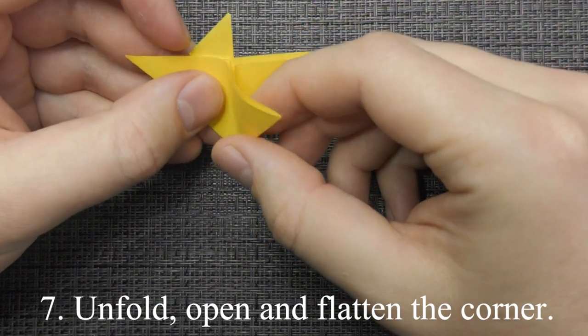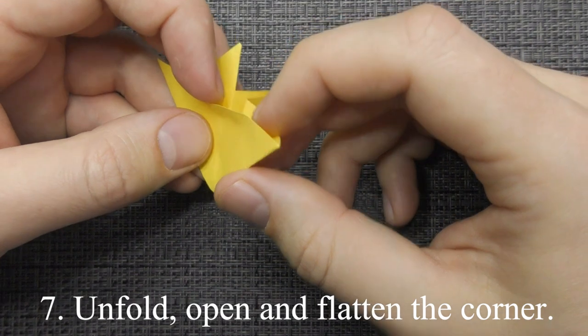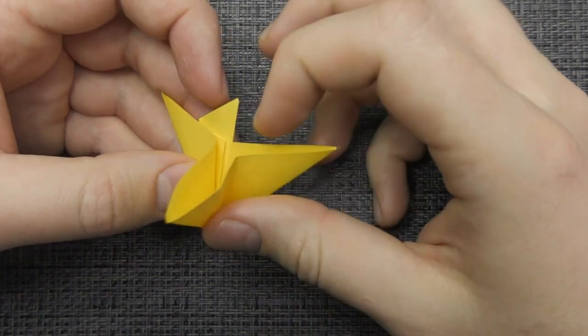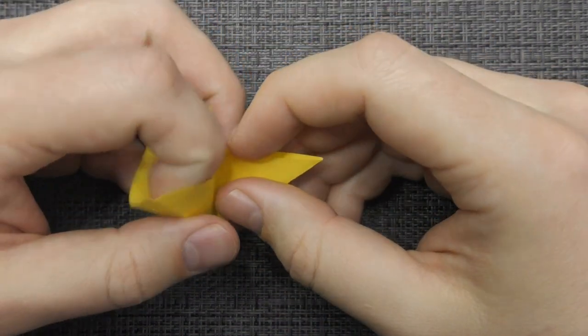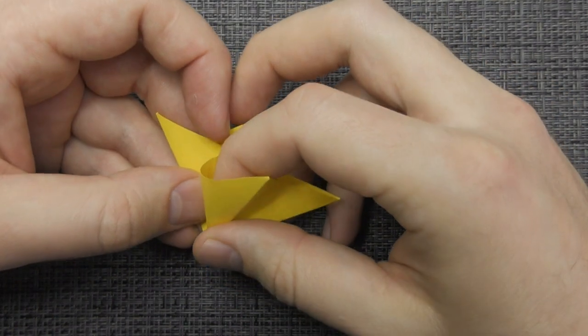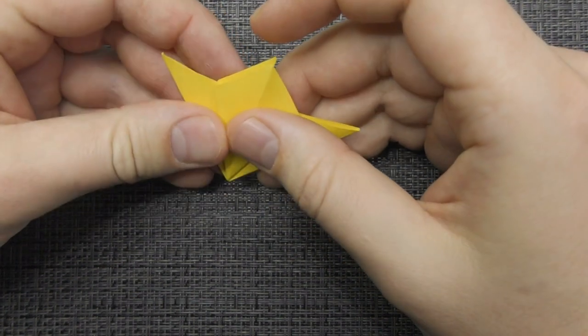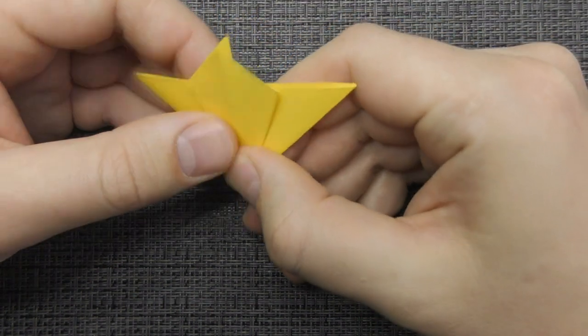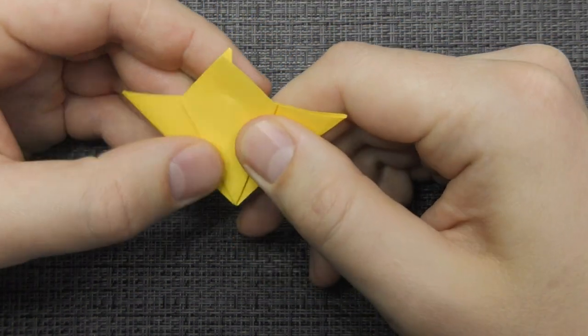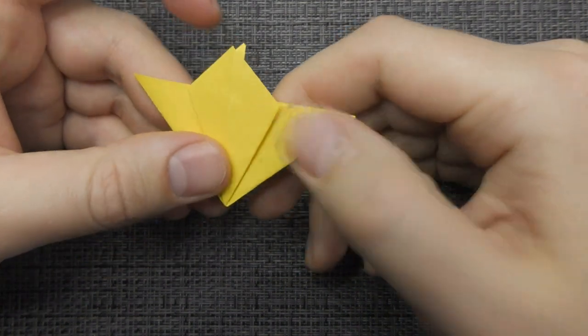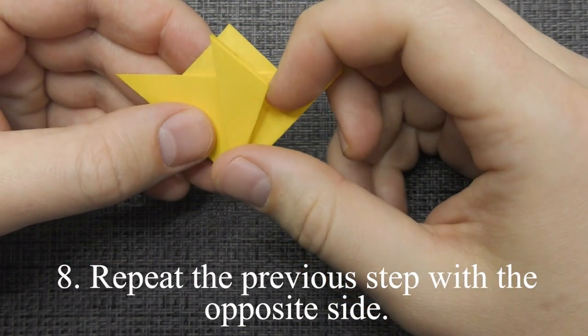Unfold, open and flatten the corner. Repeat the previous step with the opposite side.